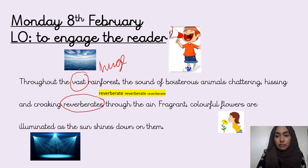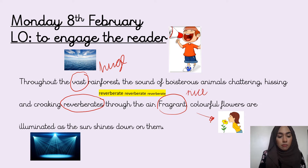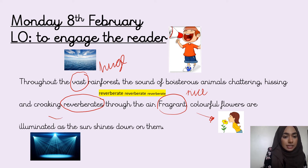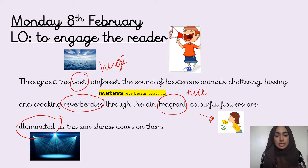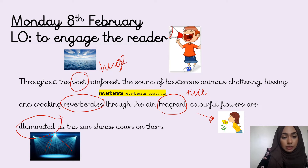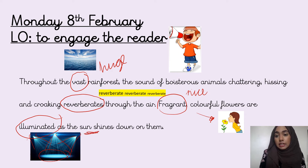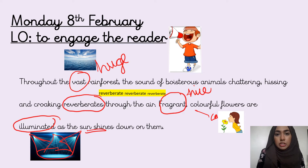Next: fragrant colourful flowers are illuminated. Fragrant — have a look at this picture — just means something that smells nice. So instead of saying the nice-smelling flowers, you use the word fragrant. Illuminated means lit up — tell your pencil what illuminated means. Over here you can see lights lighting up a stage; here the sun is lighting up the flowers, so it's reflecting on them. I also want to mention the word boisterous — it means noisy and filled with energy. The animals are very loud but filled with energy.